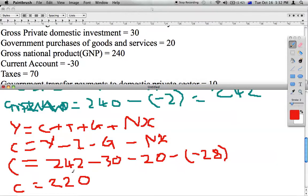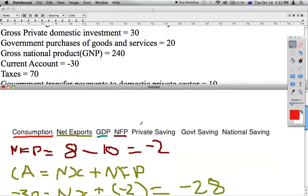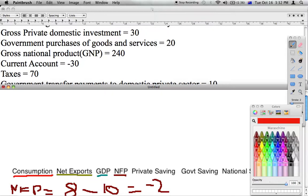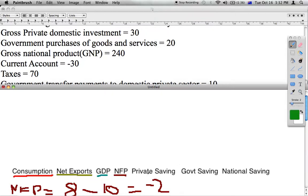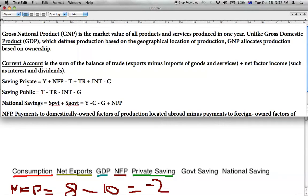And now that we have C, what else have we got up here? Private saving. We can figure that one out. I'll do it above up here. The formula for private saving is your GDP or national income, plus your net factor payments, minus your taxes, plus your transfer payments that you receive from the government, plus any interest you receive from the government, minus your consumption.